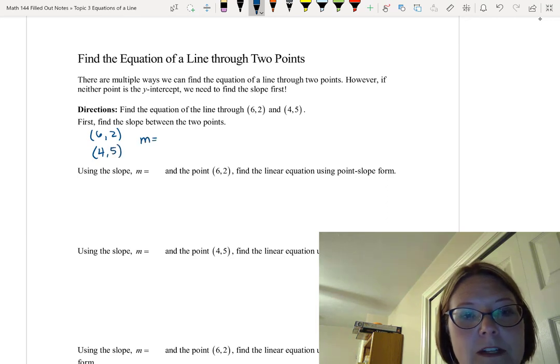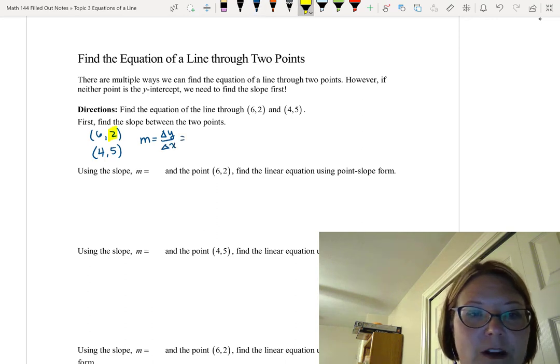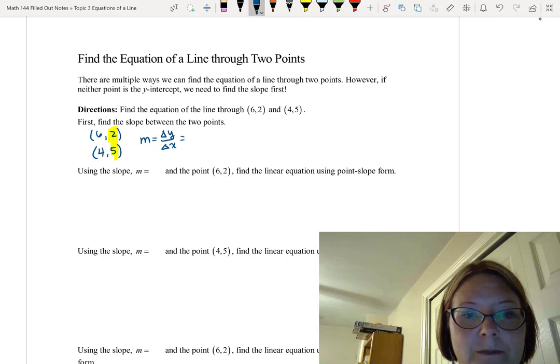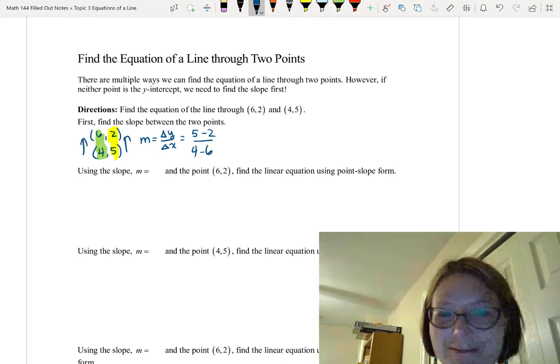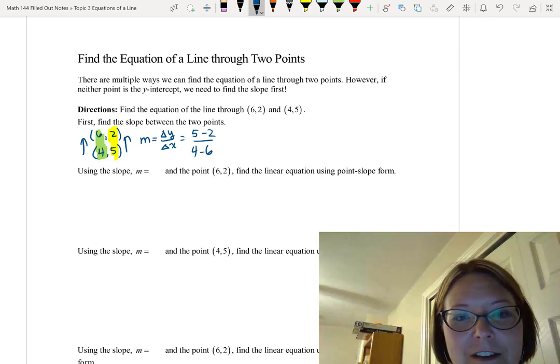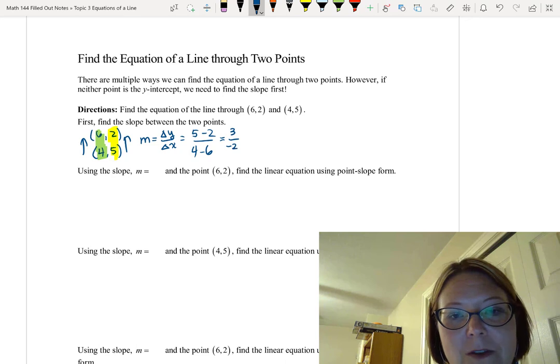The slope is going to be the change in y's over the change in x's. The change in y's is 5 minus 2, and the change in x's is 4 minus 6. Remember that whatever direction you subtract in for the y's, subtract in the same direction for the x's. 5 minus 2 is 3, and 4 minus 6 is negative 2, so we have a slope of negative 3 halves.